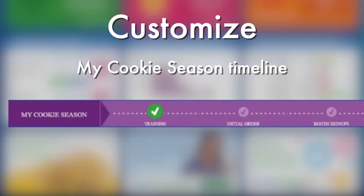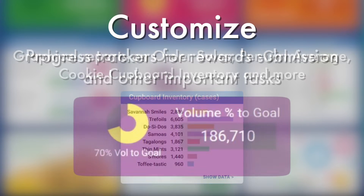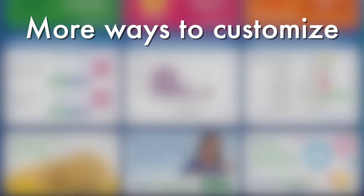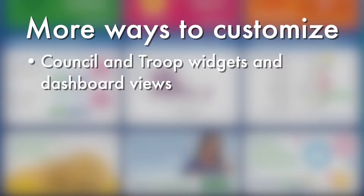Your council can customize the Dynamic Dashboard to include elements that illustrate a custom timeline for your cookie season, chart order sales totals and other key cookie sales data, or track progress on important tasks that keep the cookie season moving forward. You can create custom Dynamic Dashboard views for both council members and troop volunteers with reports and tools specifically designed for their needs.